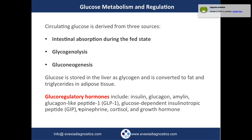Let's do a refresher on glucose. Circulating glucose is derived from three sources. First, intestinal absorption during the fed state — so the GI tract plays a major role in glucose metabolism and regulation. Second is glycogenolysis: stored glycogen, found mainly in the liver and muscles, is broken down into glucose to provide immediate energy and maintain blood glucose levels during fasting. The brain requires a steady supply of glucose and doesn't tolerate large fluctuations.